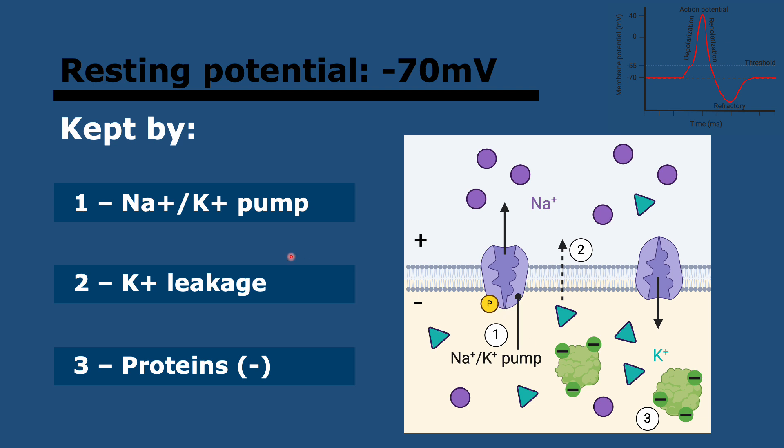This is kept in three ways. First through the sodium-potassium pump. The sodium-potassium pump pumps three sodiums out and two potassiums in. So basically it pumps more positive charges outside than inside, meaning the inside stays more negative.